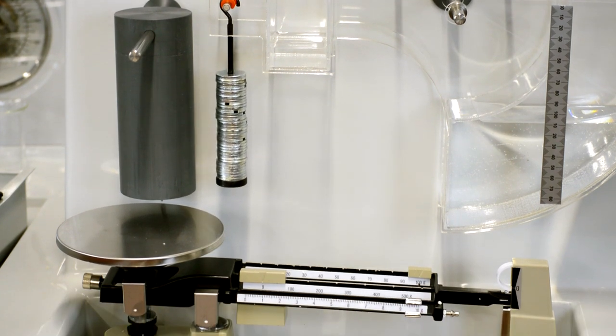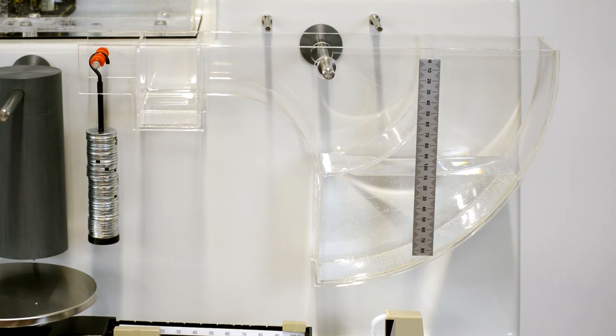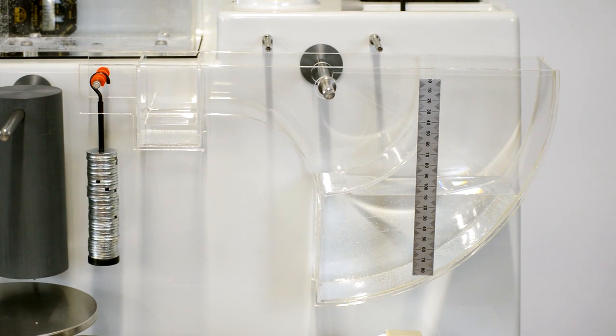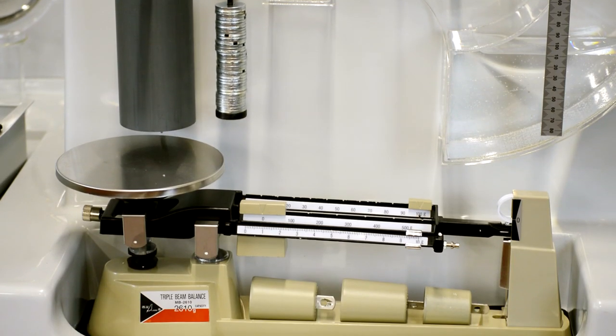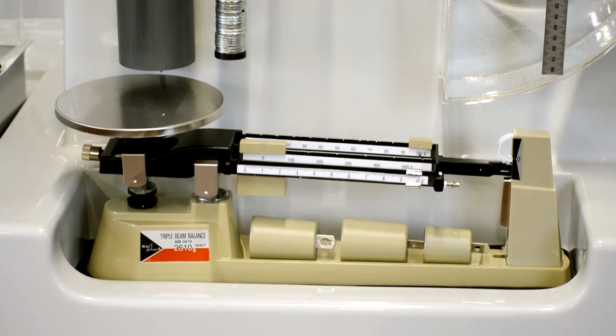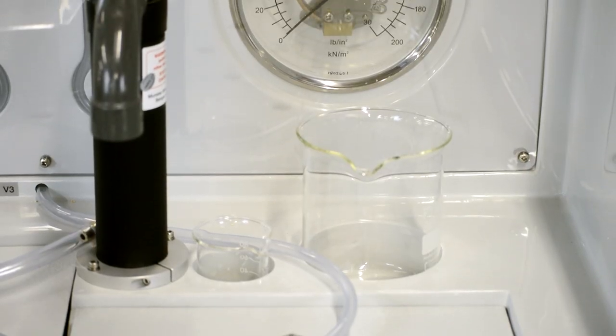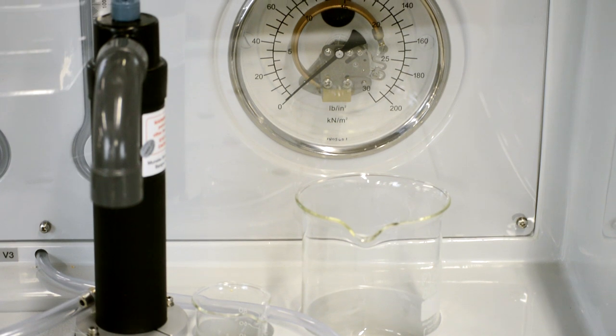Just below this we have the Archimedes experiment for proving Archimedes' law, a toroidal segment for understanding forces on a plane surface, and a beam balance. In the lower area at the back there are two measuring beakers and thermometers for simple measurements of liquid density.